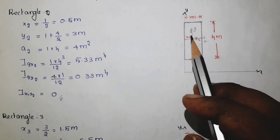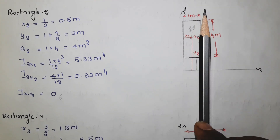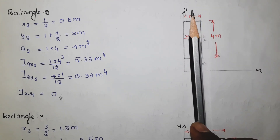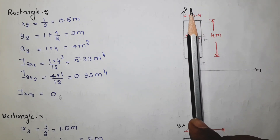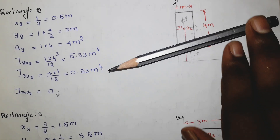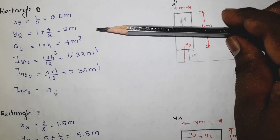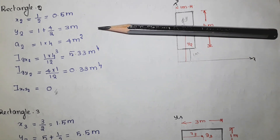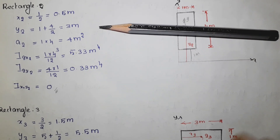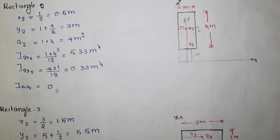The product moment of inertia with respect to these two axes is 0 because here also it is an axis-symmetrical one. If I keep my pencil like this, you can see it is an axis-symmetrical one. Similarly, that also gives an axis-symmetrical shape, so the product moment of inertia is 0.